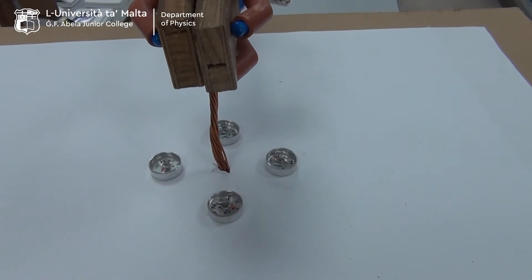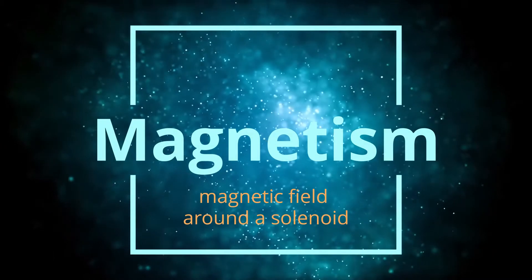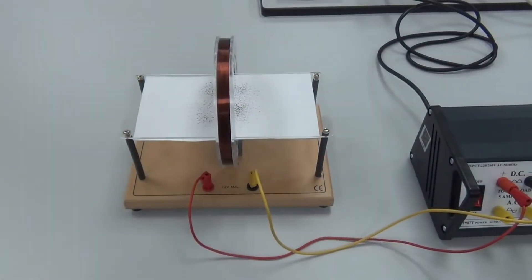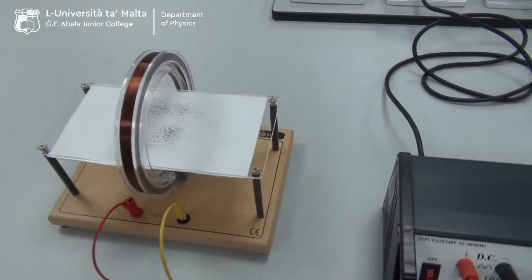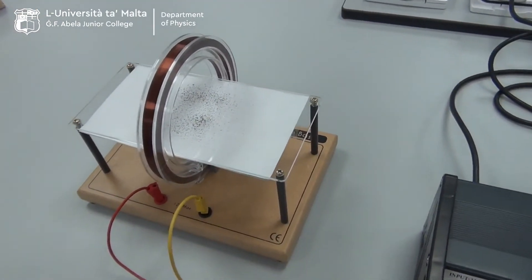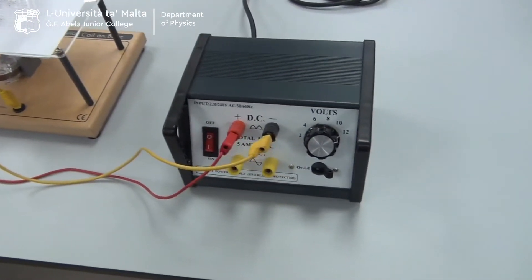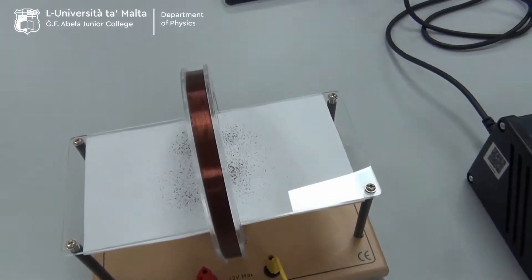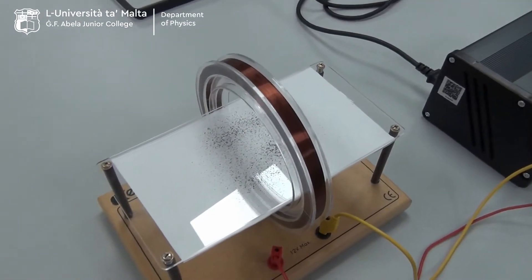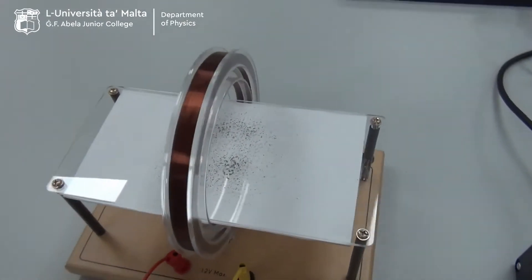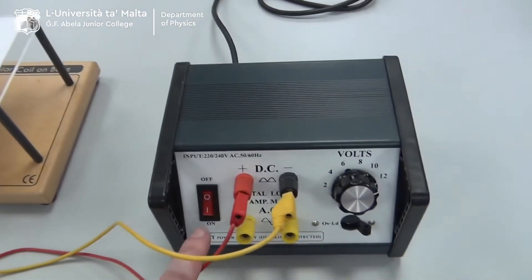In this setup we shall see the magnetic field pattern around a coil. For this setup we require a coil and the power supply. Presently the coil is switched off and we have some iron filings to see the magnetic field pattern. For the time being there is no magnetic field, the coil is switched off.